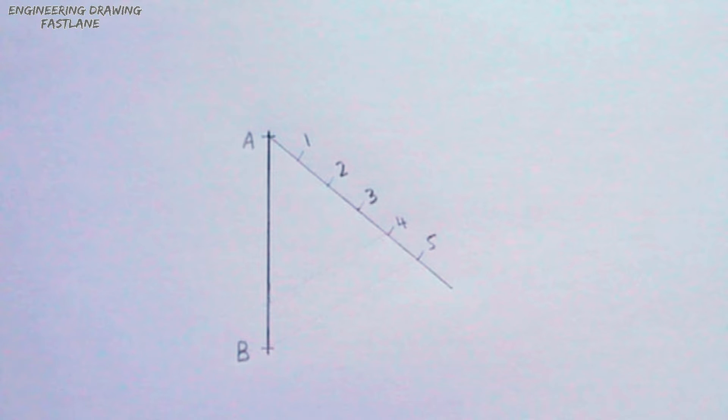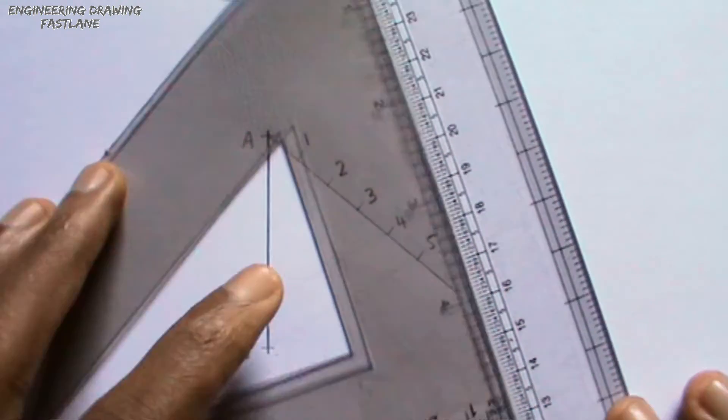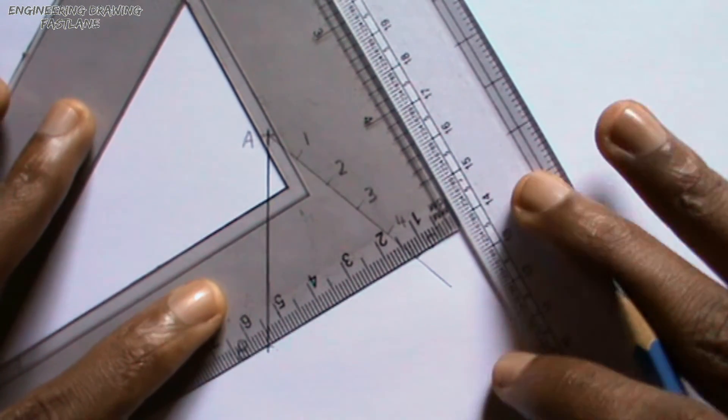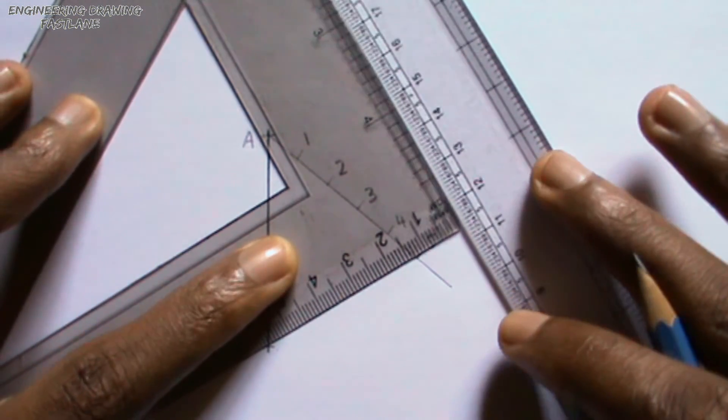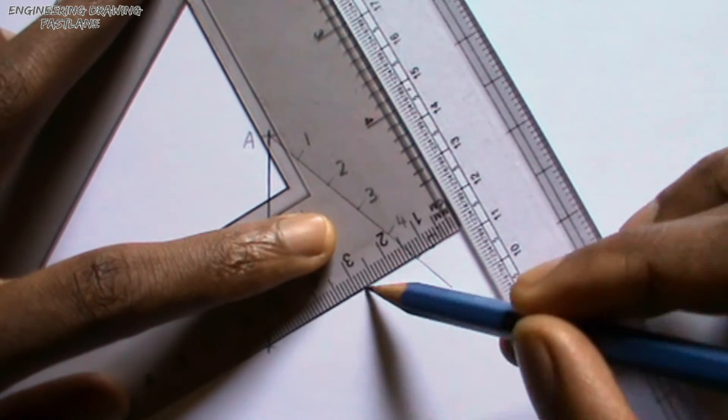The next thing I will do is to draw a line to join point B and point 5 using my ruler and set square. I will place my set square in such a way that one side of the set square passes through point B and point 5. This line should be a thin continuous line.